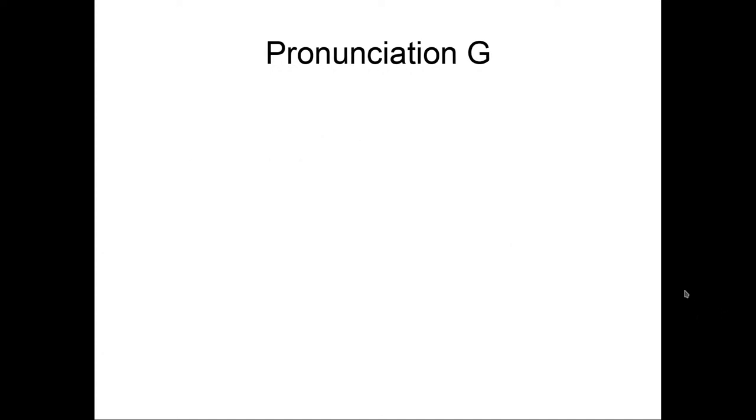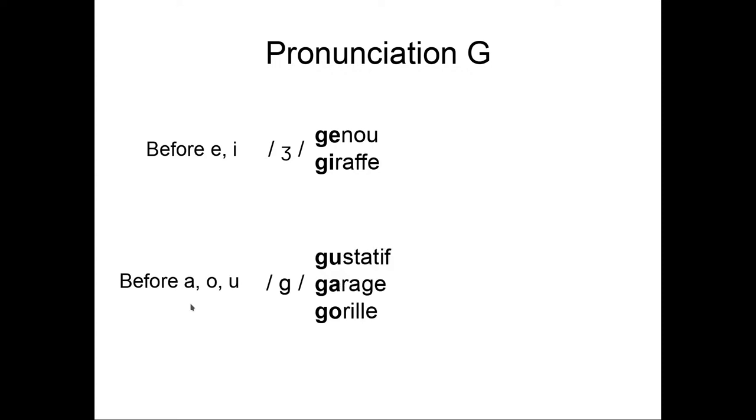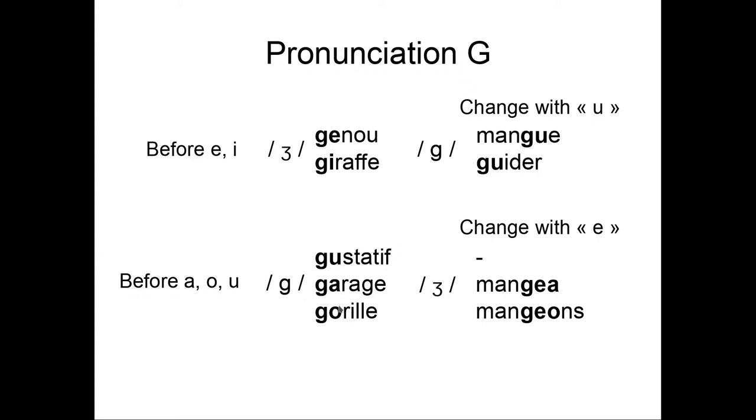How to pronounce the G sound, the G letter? Before E and I, it's pronounced ʒ, like in genou, girafe. Before A, O, or U, it's pronounced G, like in gustatif, garage, gorille. If you want to change this phenomenon, you have to add a U if you want a G sound before E or I. Mangue, guider. And if you want a ʒ sound before A or O, you put an E, like in manges, mangeoir. Attention, it's not possible to have the ʒ sound with the U. If you put, for example, this word, it's pronounced mangeur. And of course, if it's at the end, mute, don't say it.